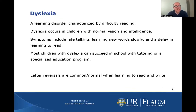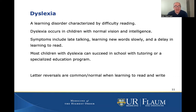I want to touch on dyslexia. This is a very common problem and can lead to reading difficulties in children. This is not an eye disease — it's more of a reading or language processing disorder. Symptoms can include late talking, difficulty learning new words, and delay in learning to read. Importantly, letter reversals and word reversals are common and actually pretty normal when children are learning to read and write. Kids that confuse their Bs and Ds — that's normal and not really a sign of any eye disease.